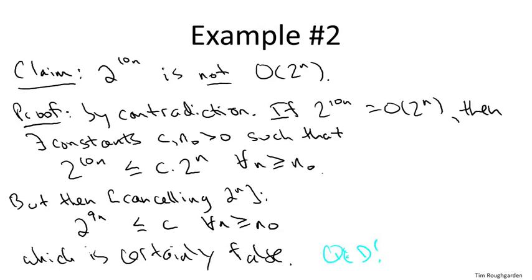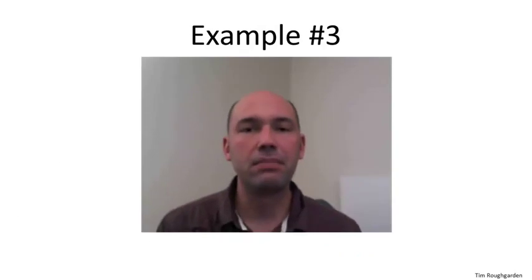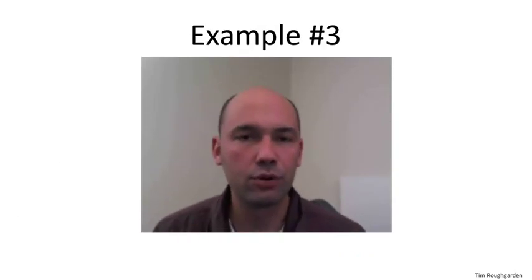This means our assumption was not the case, and indeed it is not the case that two to the ten n is big O of two to the n. So our third and final example is a little bit more complicated than the first two.